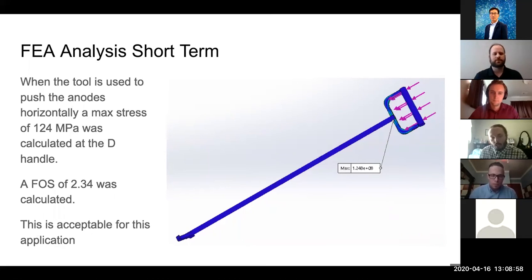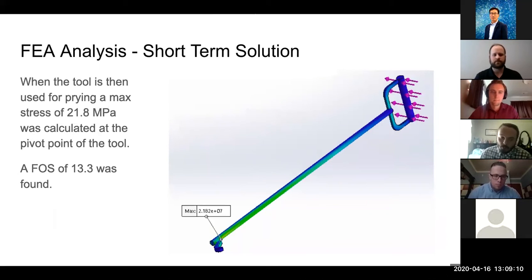While this isn't super high, we felt that this was an acceptable factor of safety because the forces being applied are pretty much the max forces that a human can apply. When we analyze the prying motion done by an operator, we can see it's a much smaller stress at the base of the tool being 21.8 megapascals, which results in a factor of safety of 13.3.